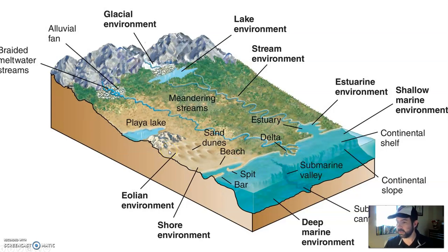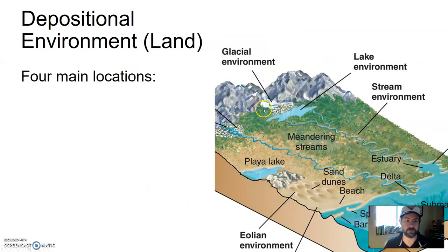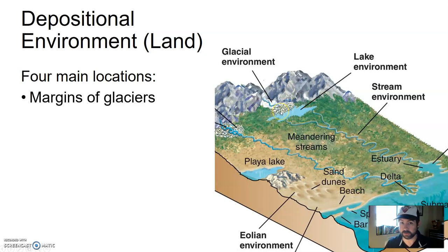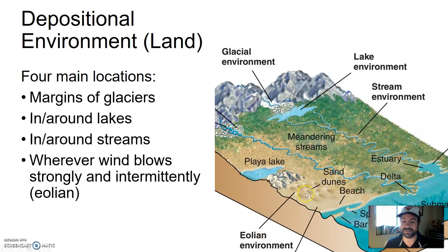There are two main areas in which sediment can be deposited: on land, or near or in the ocean. We'll treat both separately. On land, there are four main locations: at the margins of glaciers (the sides and the end), in and around lakes, in and around streams, and in what's called an eolian environment — wherever wind blows strongly and intermittently.